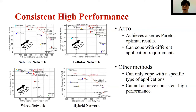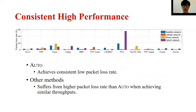Meanwhile, other methods cannot achieve consistent high performance. For example, PCC suffers from long latency in satellite and cellular networks. FUB suffers from low throughput in satellite and hybrid network environments. Meanwhile, AUTO achieves consistently low packet loss rates in all environments. For example, in the satellite network environment, its packet loss rate is about 79% and 86% lower than COPA and PCC, which achieve comparable throughput. With much higher throughput, the packet loss rate of AUTO is also lower than FUB, BBR, Vegas, and Aurora.